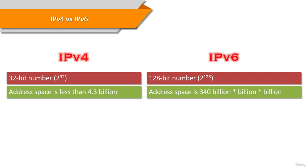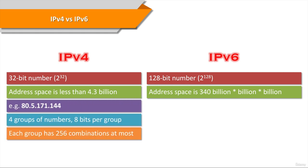IPv4 is represented by the decimal equivalent of 4 octets, separated by dots. The biggest number one can make with 8 binary digits is 2 to the power of 8 minus 1, which means 255. So each octet can be any number from 0 to 255.